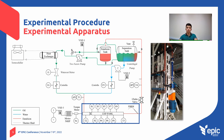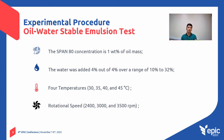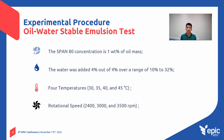The stability of the emulsion in the oil industry is due to natural emulsifiers present in crude oil. In this investigation, 1% of Span 80 surfactant was added to the tank.